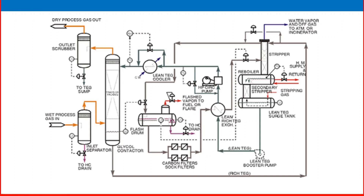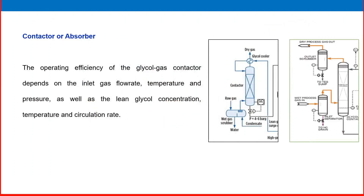So, what we have to discuss here are the various process variables which affect the performance of the absorber and stripper — how effective operation takes place in this dehydration process. The operating efficiency of a glycol gas contactor depends on: inlet gas flowrate, temperature, and pressure, as well as lean glycol concentration, temperature, and circulation rate.